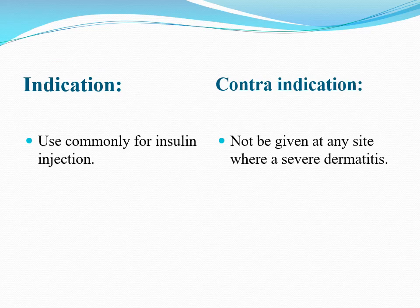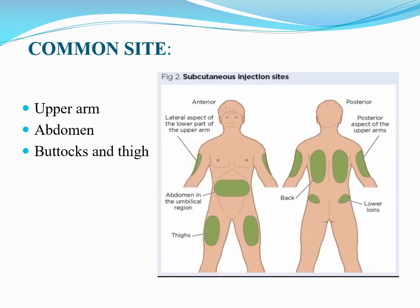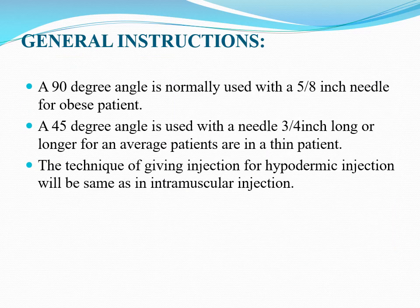Indication: Used commonly for insulin injection. Contraindication: Should not be given at any site where there is severe dermatitis. Common sites for subcutaneous injection: upper arm, abdomen, buttocks, and thigh.